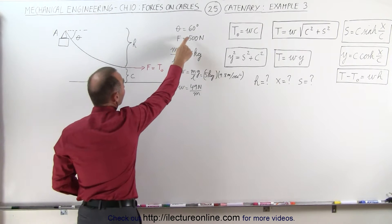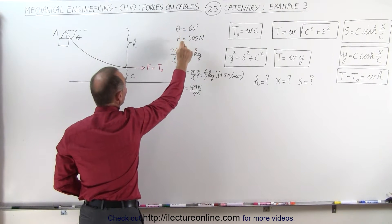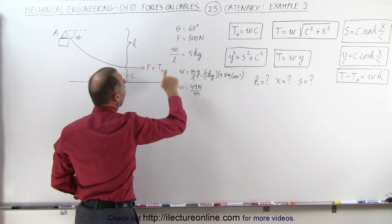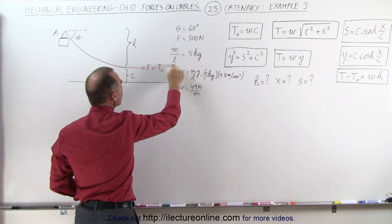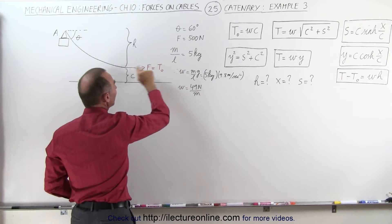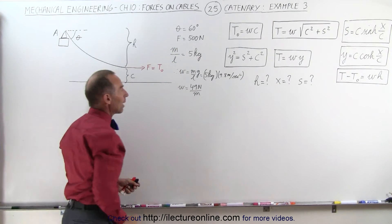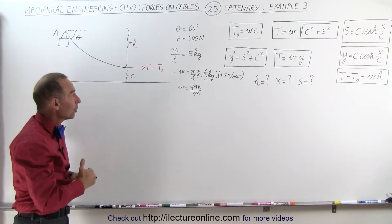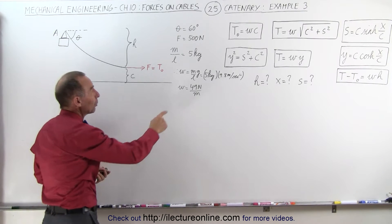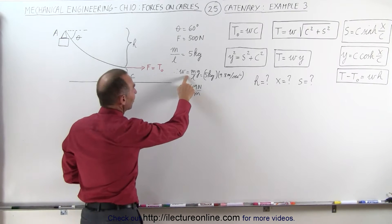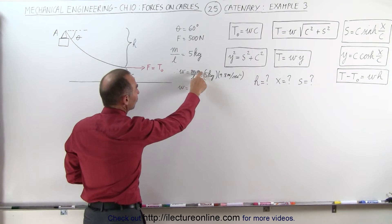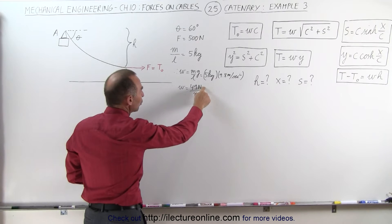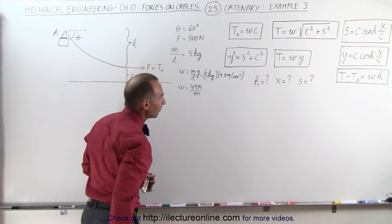We're given that the angle is 60 degrees, the force is 500 newtons, and the mass per unit length of the cable is 5 kilograms per meter. That means we have to solve for the weight per unit length, which is the mass per unit length times g, giving us 49 newtons per meter.